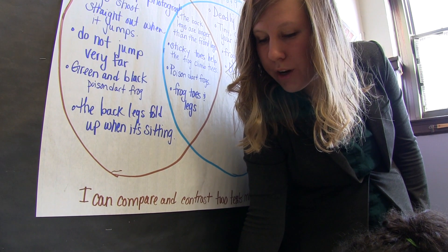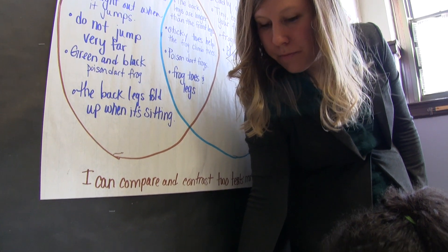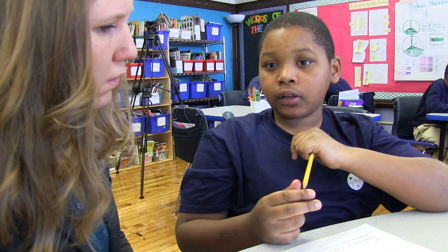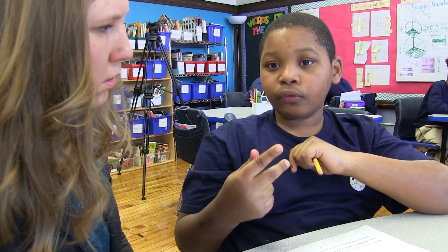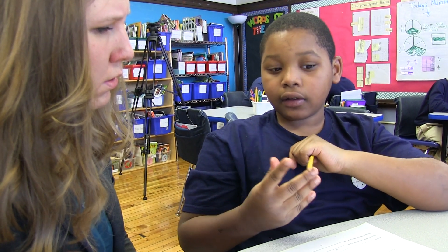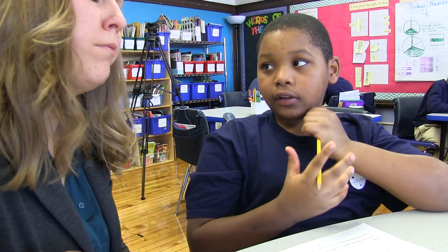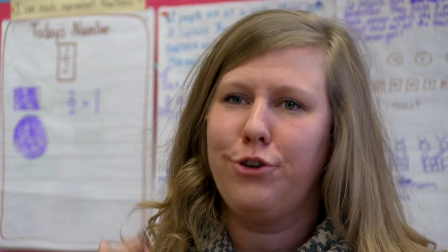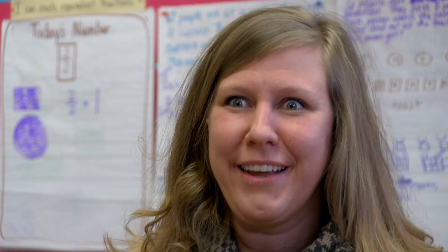While kids are working at their desks, I'm looking for examples that I can highlight for the whole class. Nairobi was doing a really sophisticated strategy where he said he didn't have to draw out each sandwich anymore — he knew that two, four, six, eight is two sandwiches per person.